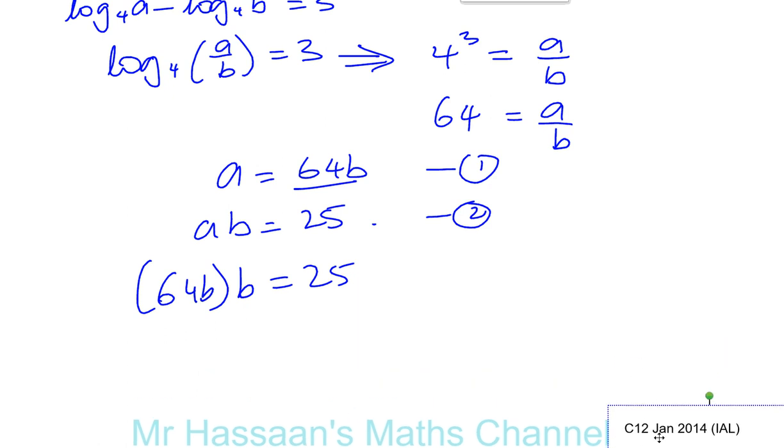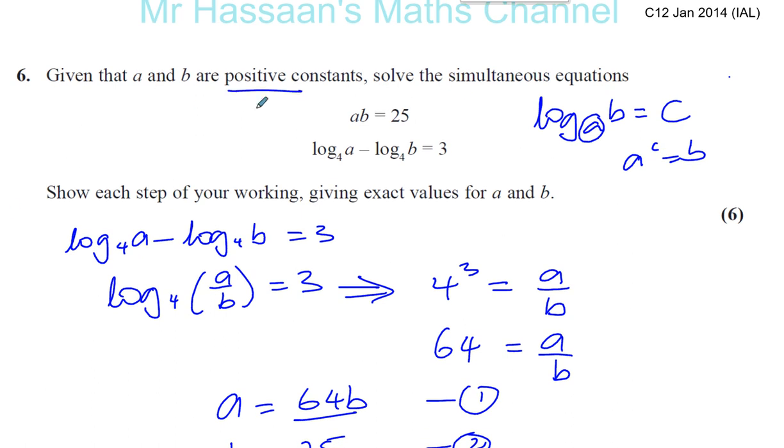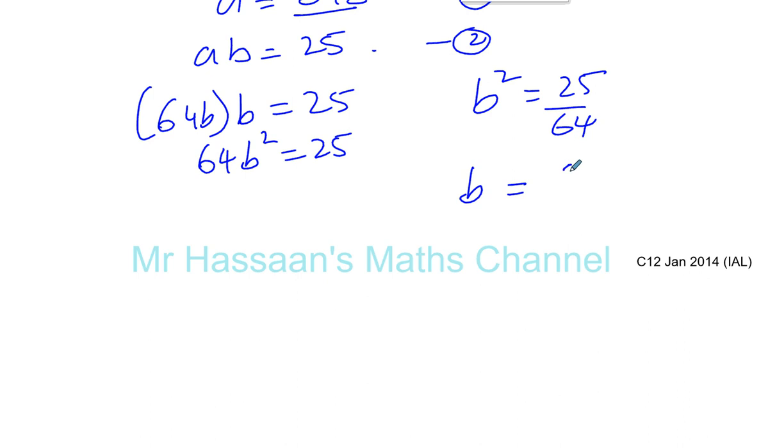And now I can try to solve it. So we have here 64B squared equals 25. So I can say B squared is equal to 25 over 64. If I take the square root of both sides, I only want the positive square root because it says A and B are both positive constants. The square root of 25 is 5, the square root of 64 is 8. So B is equal to 5 over 8.